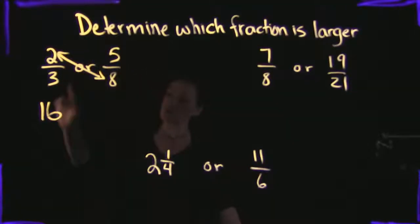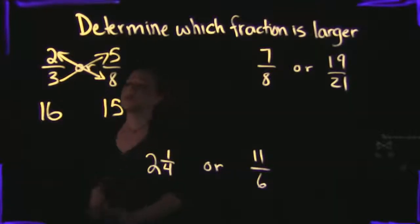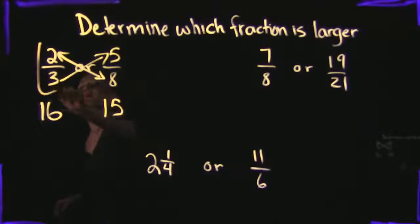And that's going to be my representation for the fraction on the left. Then I can do the opposite with the other cross-section here. I can do 3 times 5, and 3 times 5 is 15. After this, it's just a matter of comparing the two different numbers. Which one is bigger, 16 or 15? 16 is definitely bigger than 15. And since 16 goes with the fraction here on my left, that means that 2 thirds is larger than 5 eighths.